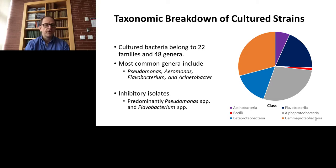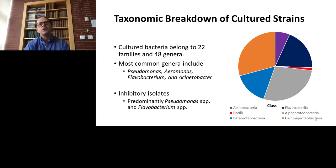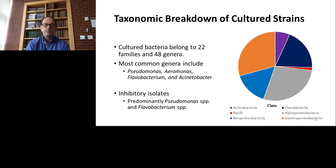The overall taxonomic breakdown shows we cultured bacteria belonging to 22 different families and 48 different genera. The most common genera included Pseudomonas, Aeromonas, Flavobacterium, and Acinetobacter. Most of the isolates that inhibited pathogens actually belonged to Pseudomonas. Thinking back to the earlier slide showing changes in the microbial community as fish grew — the biofilms in raceways containing the youngest fish had the most Pseudomonas, and then later they were less abundant. So these Pseudomonas seem to produce antibiotics, but they're not that abundant in the older biofilms.